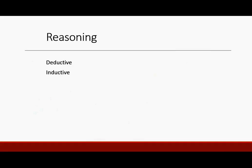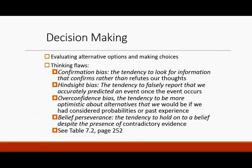Reasoning can be deductive or inductive. Deductive is to deduce from a number of examples and see how it would apply to one example. Inductive reasoning is looking at one example and generalizing from what has occurred in one situation. In decision making, we evaluate alternative options and make choices. But we have flaws in our logic — thinking flaws.